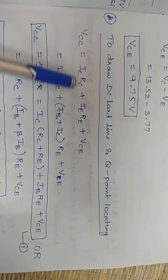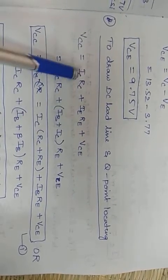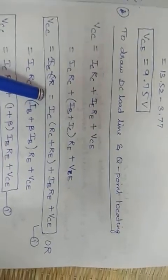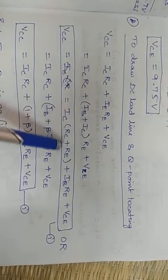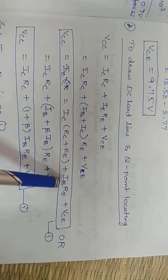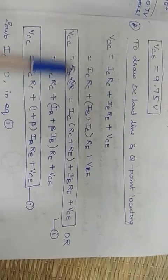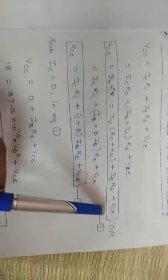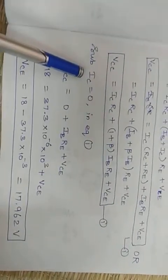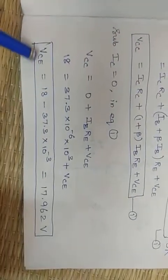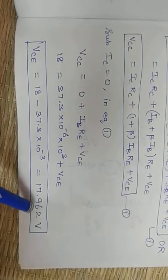For the DC load line, the equation is: VCC = IC×RC + IE×RE + VCE. Since IE = IB + IC, this expands and IC is factored as common. Substituting IC = 0 to find the x-axis point gives VCE = 17.962V. This is the x-axis intercept of the load line.